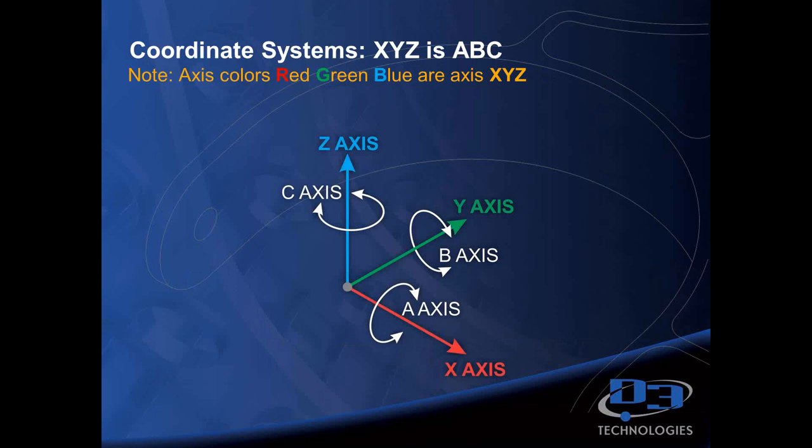It's all going to run off of X, Y, and Z, and rotation about each of those axes is A, B, and C. You can remember that by X, Y, Z maps to A, B, C, and those go by red, green, blue.